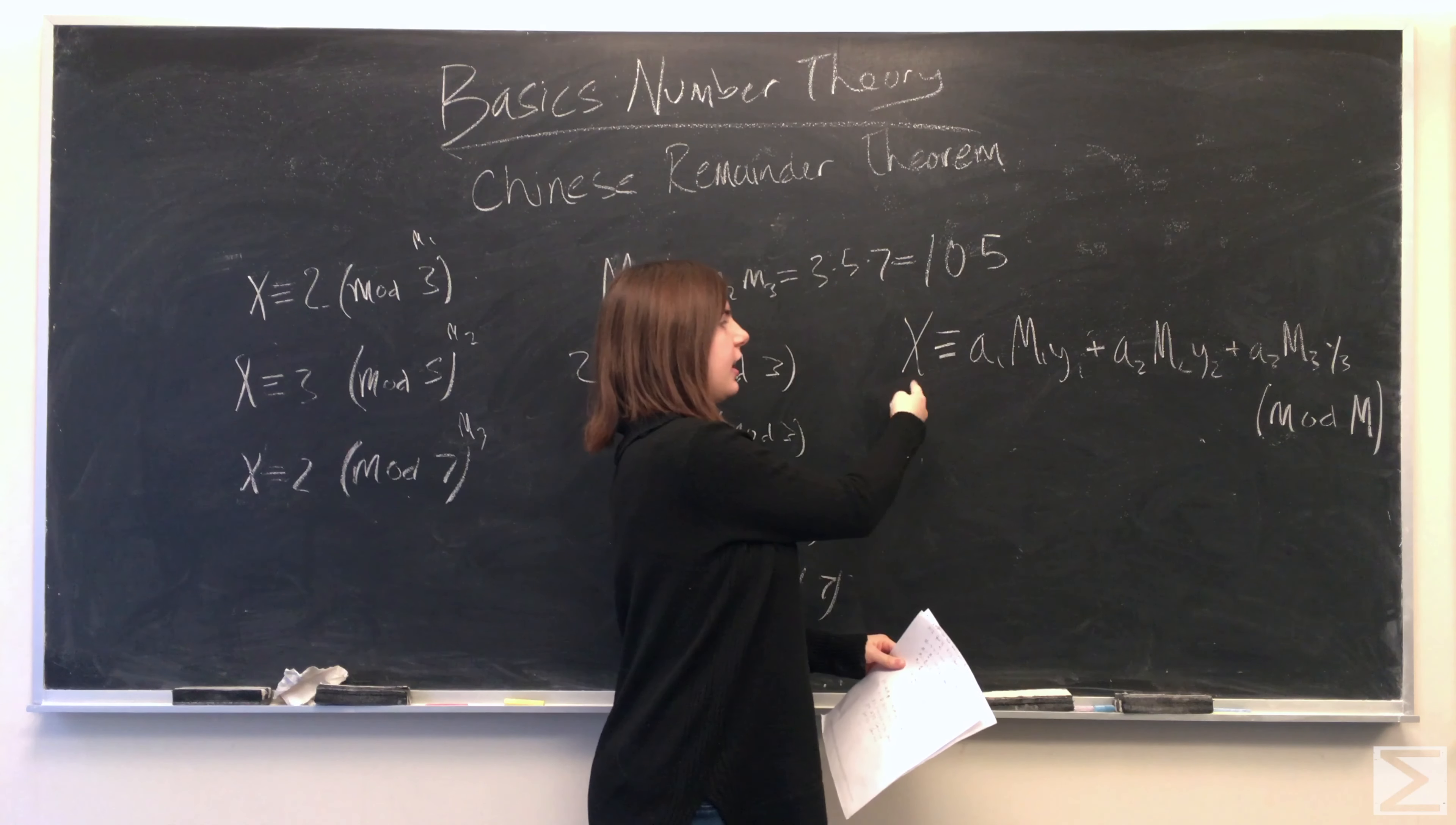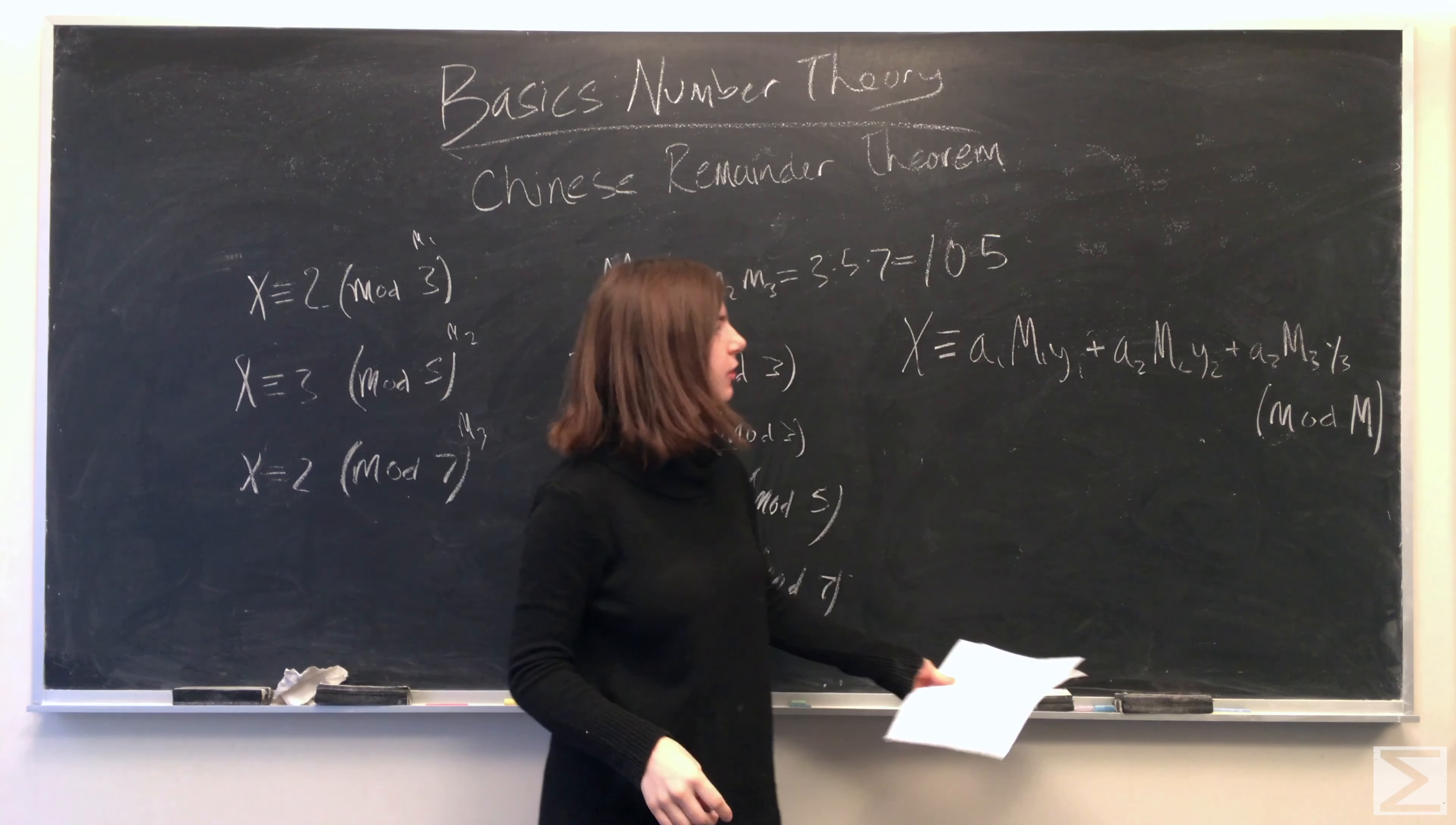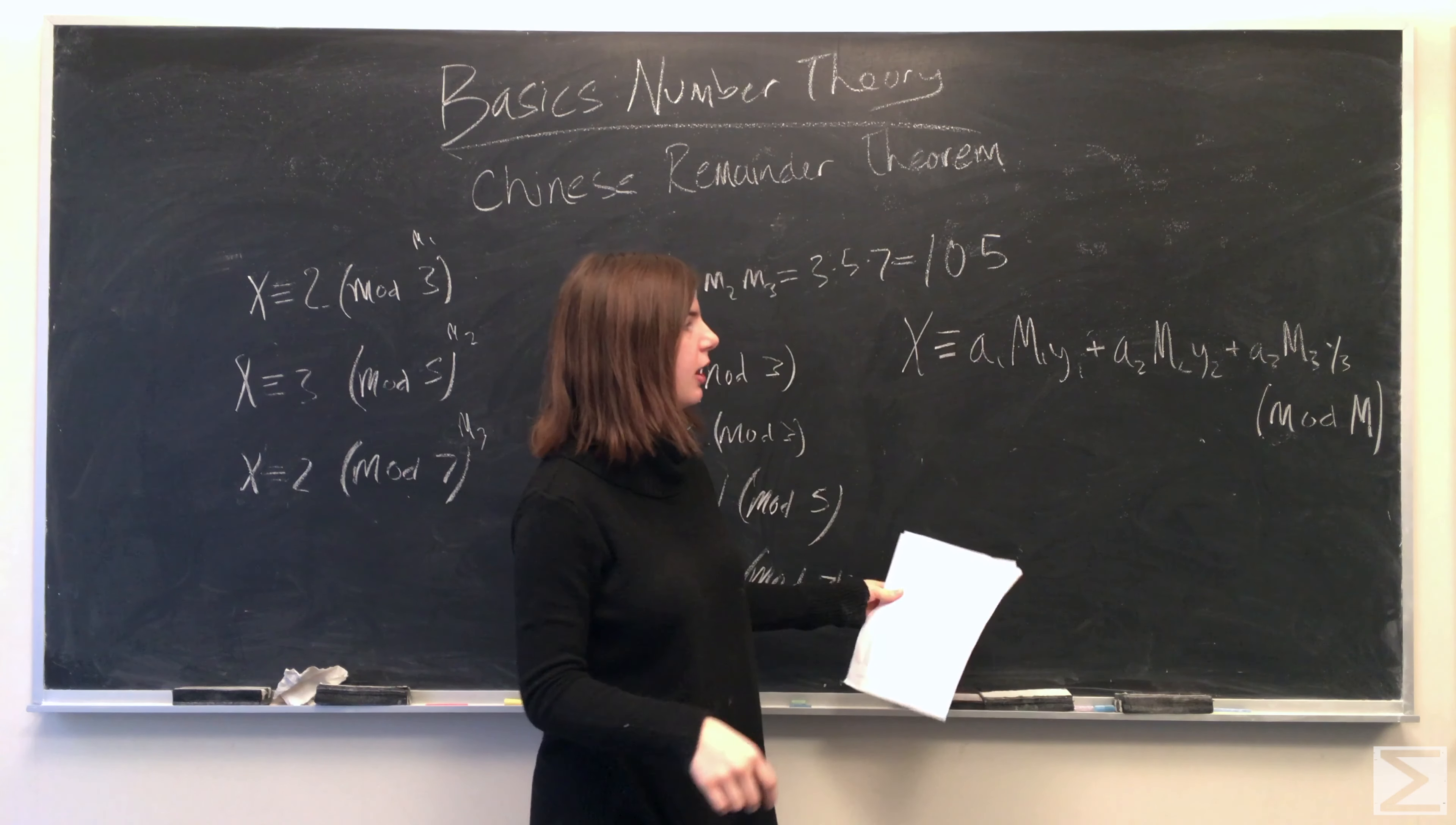So now we know that x is congruent to a1 times big M1 times y1, plus a2 times big M2 times y2, plus a3 times M3 times y3, all mod big M.